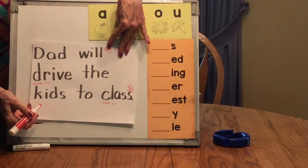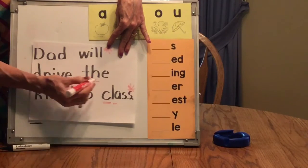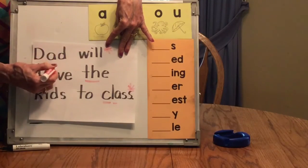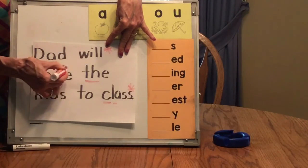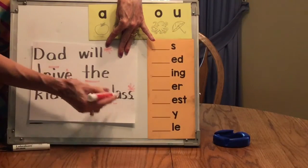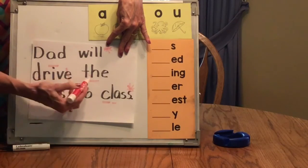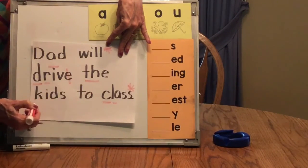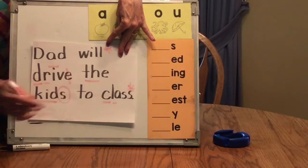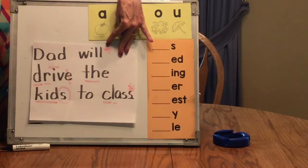All right, so we're looking for digraphs. T-H, I think, is the only one I see. And then long vowel words. Dad will drive long I, silent E, the kids to class. Is that the only one today? Let's look at kids. Base word, kid. Suffix S. All right, I think that gets all of those for today.